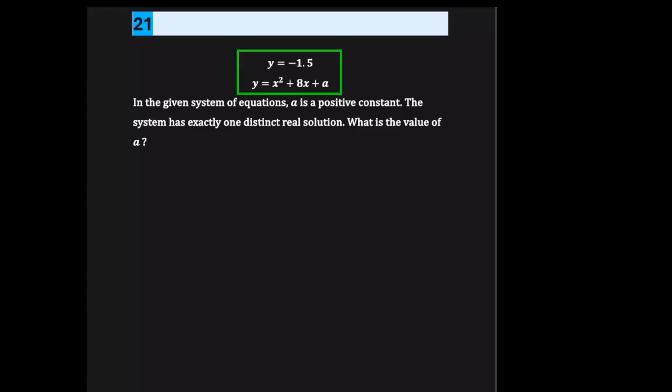We have a system of equations, simultaneous equations. So the first step, we're going to solve the system. The value of y is negative 1.5, so we substitute that value into y: x squared plus 8x plus a plus 1.5 equals 0. So we have that quadratic equation.